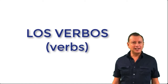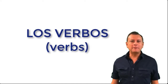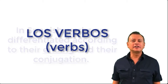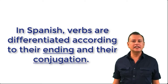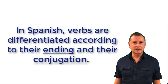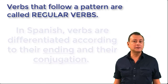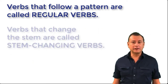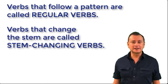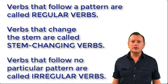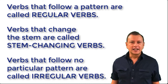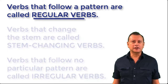Hola, bienvenidos a Advantage. I'm Fabio. Today we are going to explore the world of verbs. In Spanish, verbs are differentiated according to their ending and their conjugation. We have verbs that follow a pattern — we call them regular verbs. Certain verbs change only the stem and we call them stem-changing verbs. And finally, we have verbs that follow no particular pattern — we call them irregular verbs. So today we are going to start the study of regular verbs.